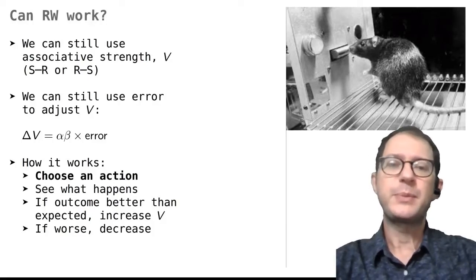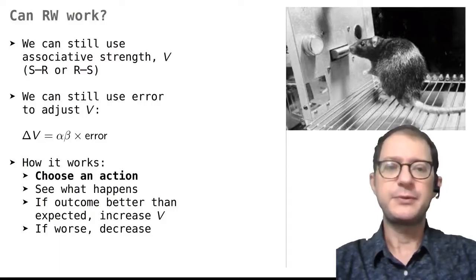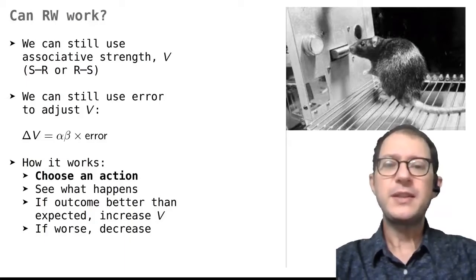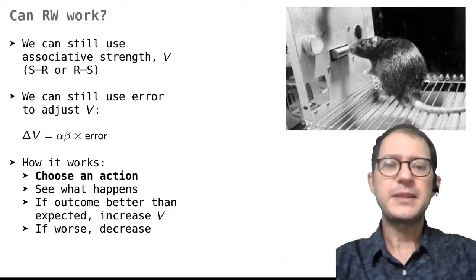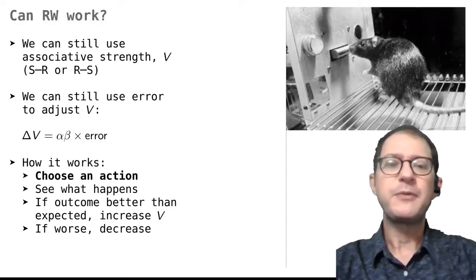Suppose that at some point it presses the lever by accident and gets food. At this point, we can say that the rat has made an error. Not in the sense that something bad happened, but in the sense that pressing the lever had a meaningful consequence, the food, that the rat did not expect. The rat thought that pressing the lever had no value, but it turns out that that was wrong.